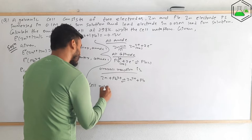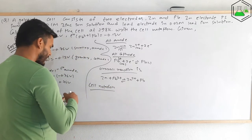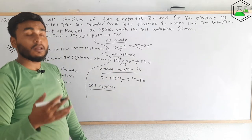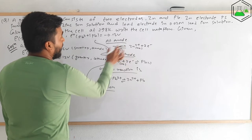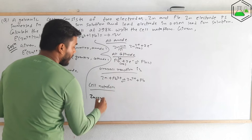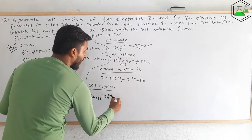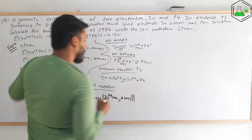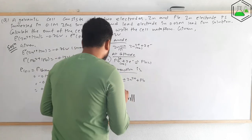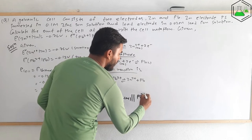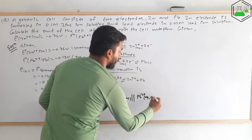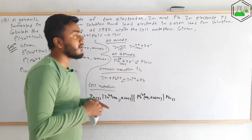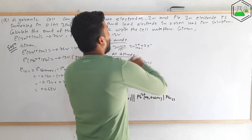The cell notation: on the left (anode) we write Zn(s) | Zn²⁺(aq, 0.1 M), then a double vertical line for the salt bridge, and on the right (cathode) Pb²⁺(aq, 0.02 M) | Pb(s). This is the cell notation of this cell and is one of the answers required.